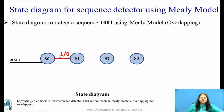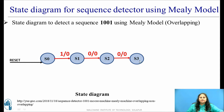Now in state S1, it is waiting for the second bit. If the second bit received is 0, it will move to the next state, so the received bit is 1, 0. Since the sequence is not yet completed, the output is still 0. The first three bits have been received. Now in state S2, if the next bit received is 0, there is a state transition taking place to S3. Since the sequence is not yet completed, the output is still 0.